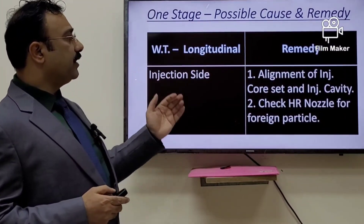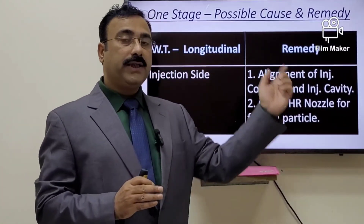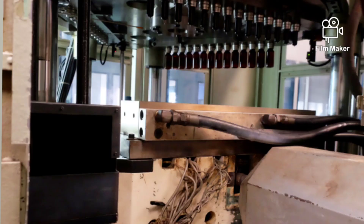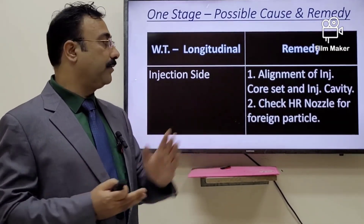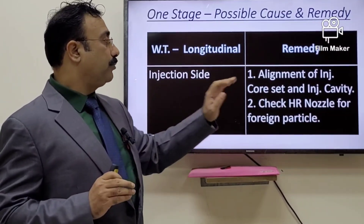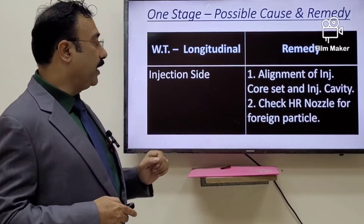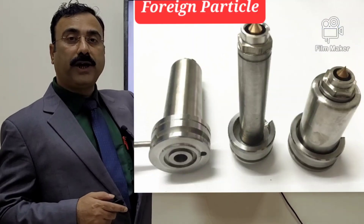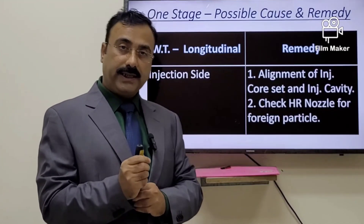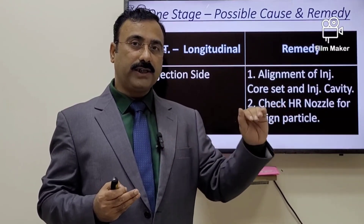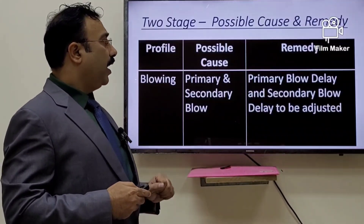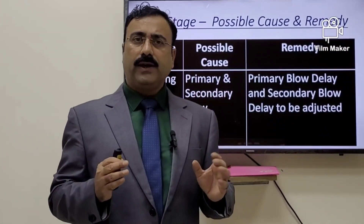On the injection side, if the problem is not yet solved, check the injection core and cavity alignment. There may be misalignment or shaking due to vibration during preform molding. Also check the HR nozzle for foreign particles — if there is a foreign particle in the HR nozzle, material will flow to one side, making longitudinal wall thickness variation an obvious result.